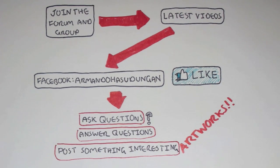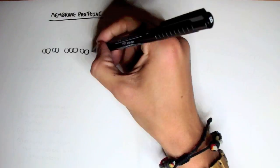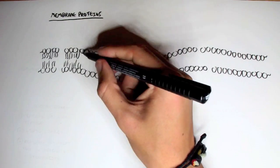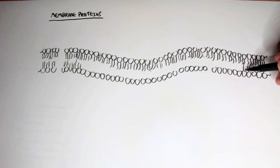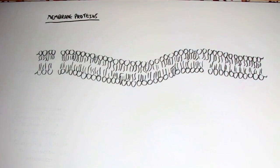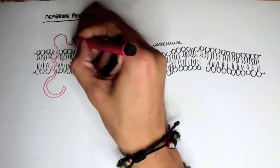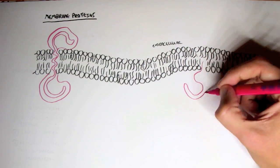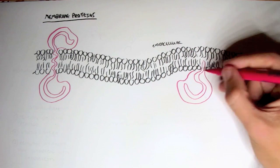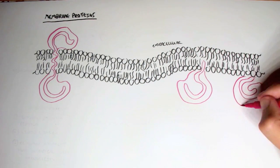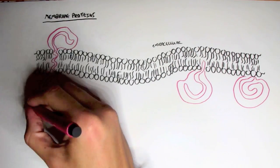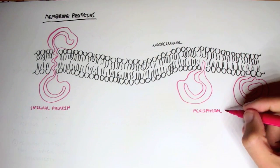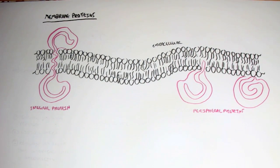We're going to talk about membrane proteins in this video. There are many types including channels and transporters, but we'll look at the two main types first. In the fluid mosaic model, these are the integral proteins — the ones that span the membrane — and the peripheral proteins, the ones on the inner membrane. Together, integral and peripheral proteins make up the fluid mosaic model.